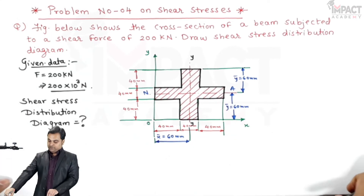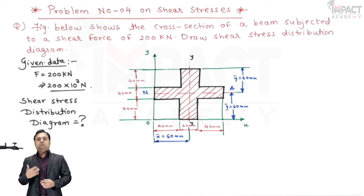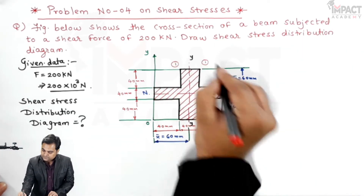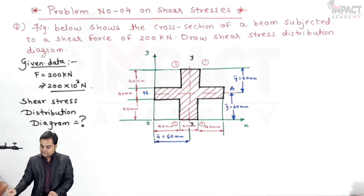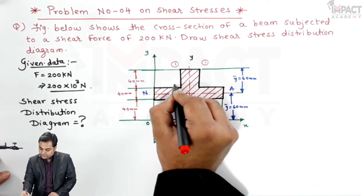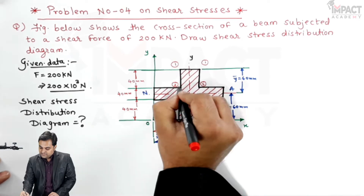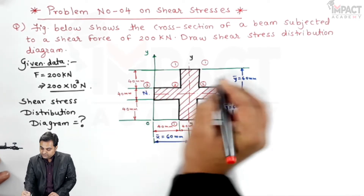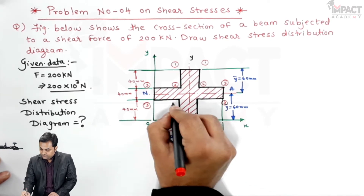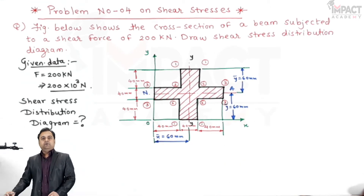To find the shear stress distribution diagram, we need to calculate shear stresses at various layers, and the numbering of layers is quite important. At the top, layer 1. At 40 mm depth from the top, section 2 has a width of 40 mm. At the same height of 40 mm from the top, layer 3 has a total width of 120 mm. The same notations apply at the bottom due to symmetry.